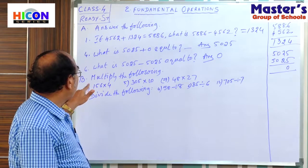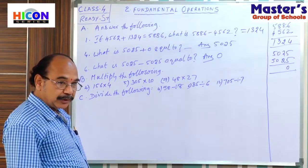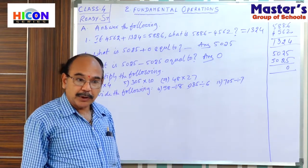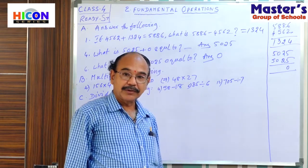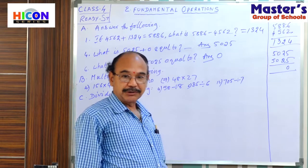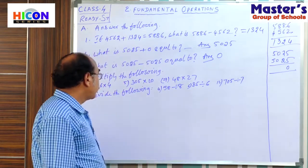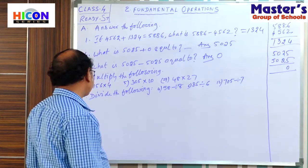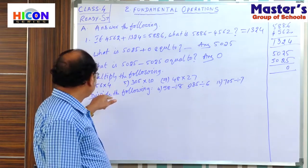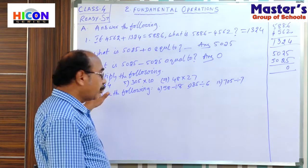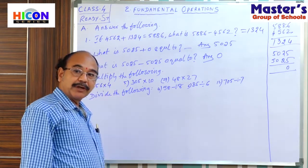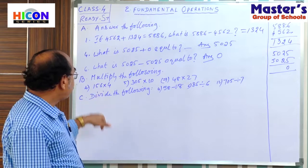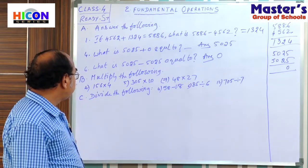Now come to section B: Multiply the following. In the first chapter, we already studied about multiplication. So to check your knowledge, this review exercise has been given. Just for your understanding, I will teach the fourth, fifth, and seventh problems. Now see the fourth one: 156 into 4.